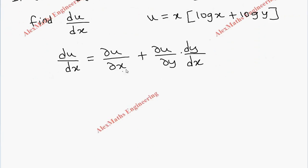Now, du by dx is nothing but, first term is partial u by partial x. So we have to differentiate this with respect to x. So y is treated as a constant. So we have to use product rule.